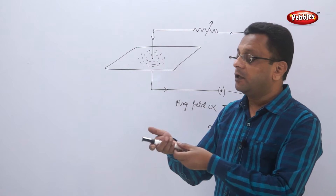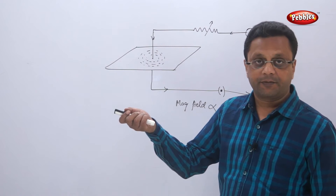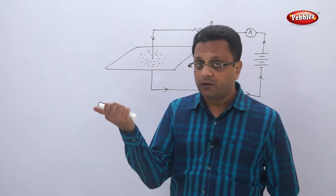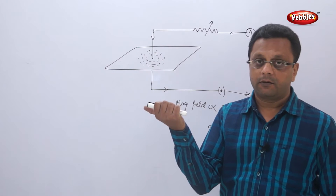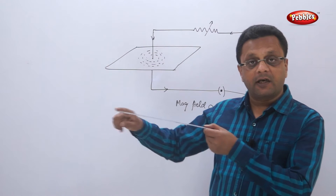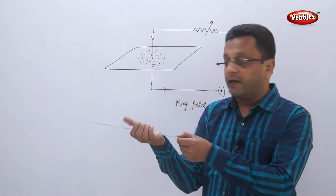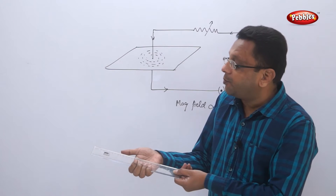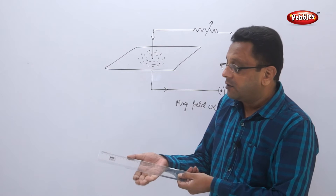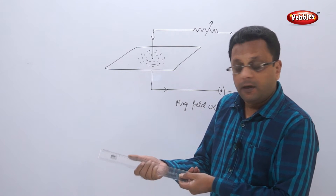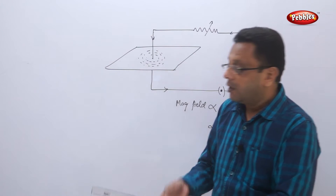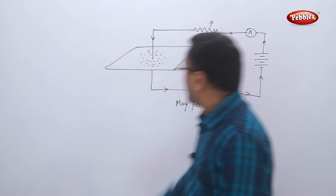If I hold this current-carrying conductor in my right hand, and my thumb is pointing towards the direction of flow of current, then can you see the curved fingers? These curved fingers show the direction of the magnetic field.